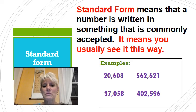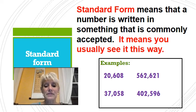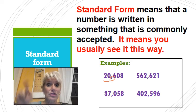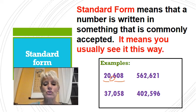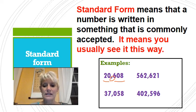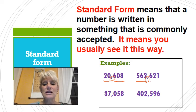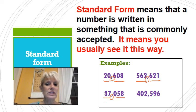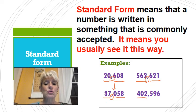Standard form means this is just the way we usually see the number. This says twenty thousand — and when we get to that comma, I always say 'thousand' — twenty thousand six hundred eight. We do not say 'six hundred and eight.' It is twenty thousand six hundred eight. The next one is five hundred sixty-two thousand six hundred twenty-one. We have thirty-seven thousand fifty-eight. We did not say anything about hundreds because it has a zero. The next one is four hundred two thousand five hundred ninety-six.